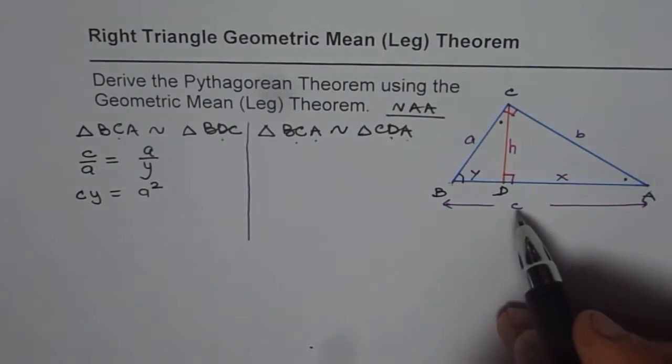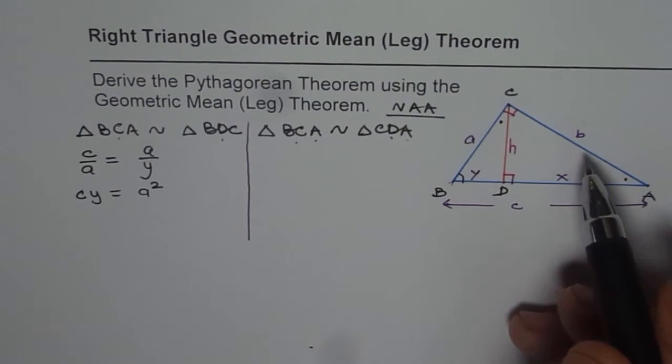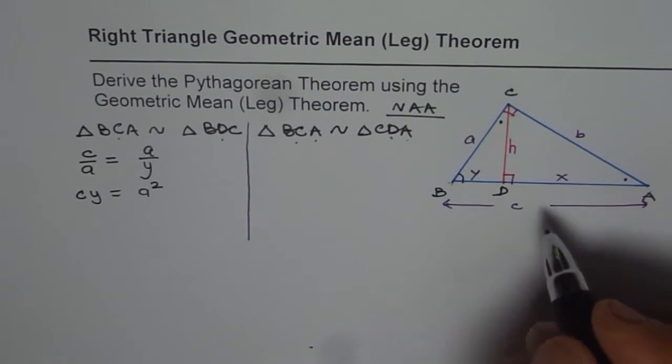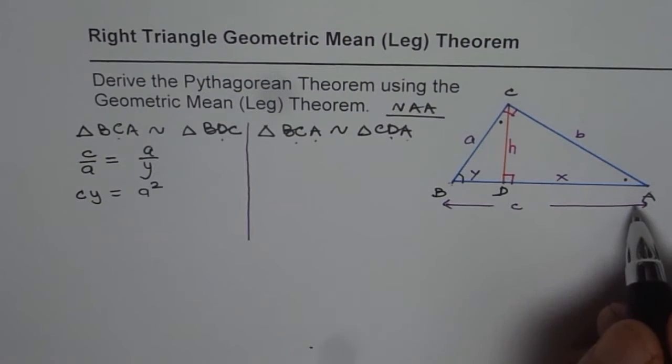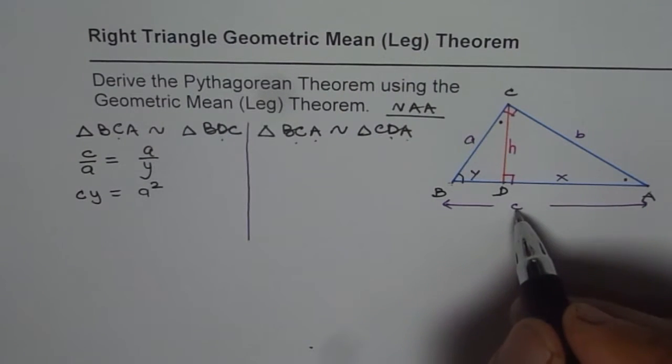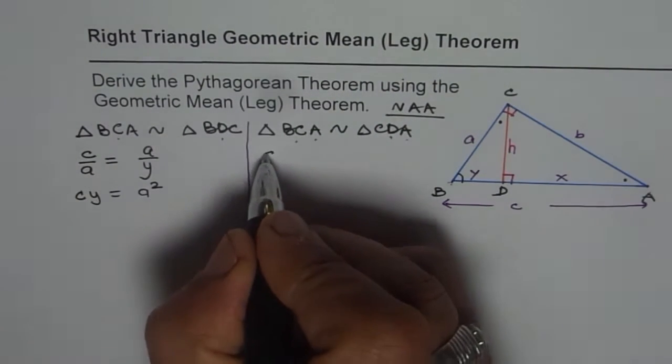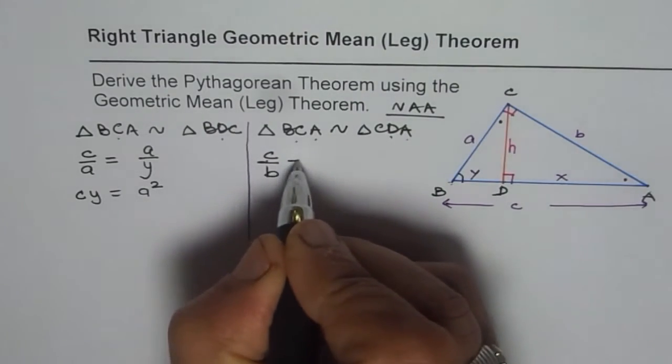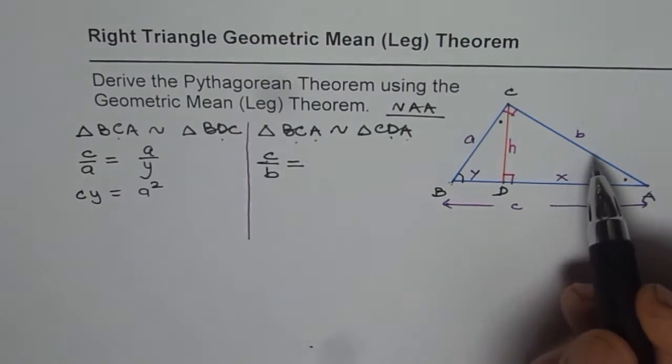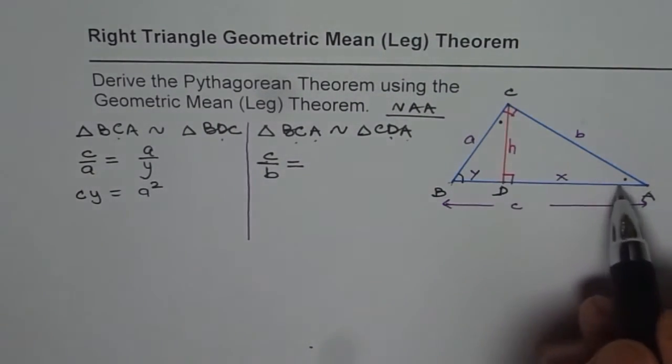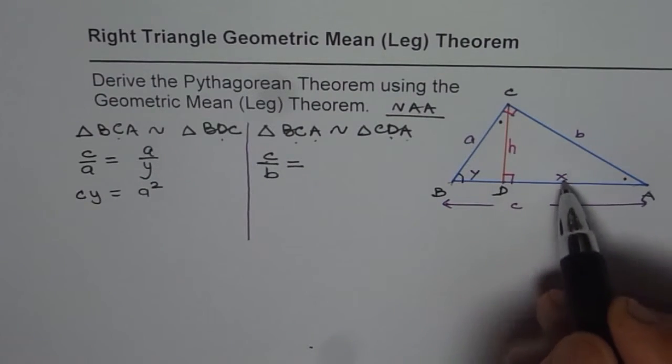So here also, we can compare the ratio of the sides with hypotenuse. And what do we get? So for the big triangle in these two triangles, it is C over B, right? Is equal to, the hypotenuse for the smaller triangle here is B, right? B over X.